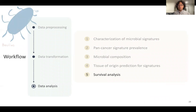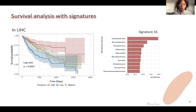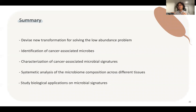For the last analysis, we performed survival analysis. Here I show an example of signature 16, which is enriched in liver cancer. This signature appears to be protective: patients with higher prevalence of this signature have better survival outcomes than the lower prevalence group. This shows that our signatures can be used not only for identifying cancer types, but also for several biological studies.